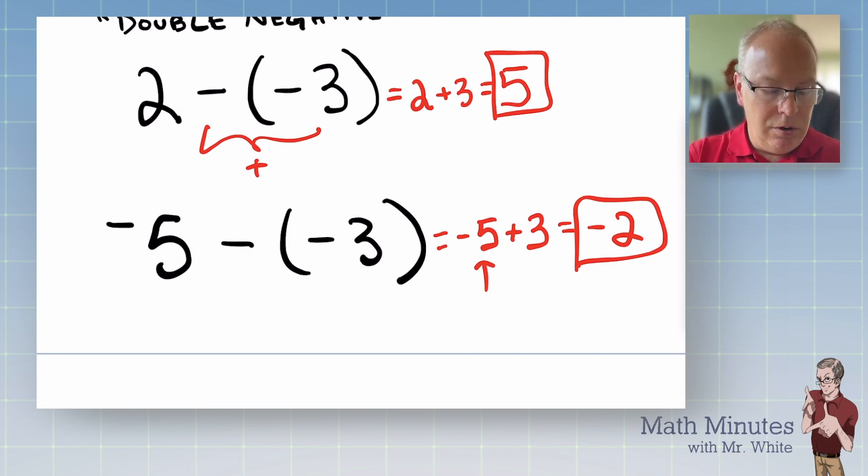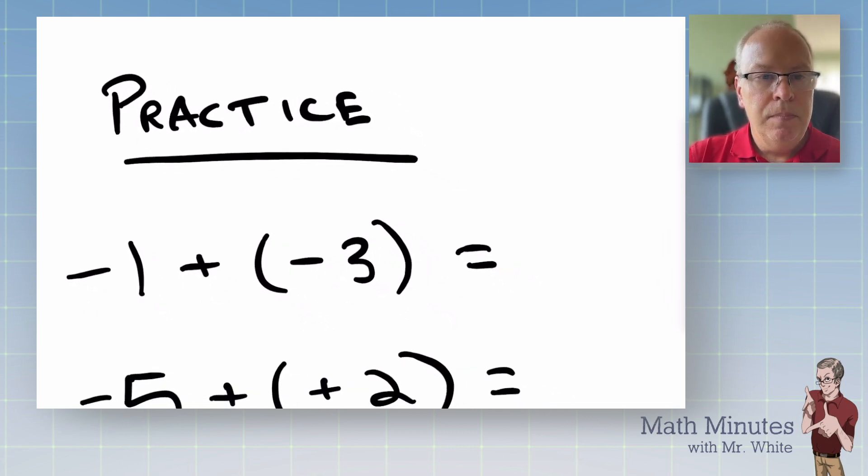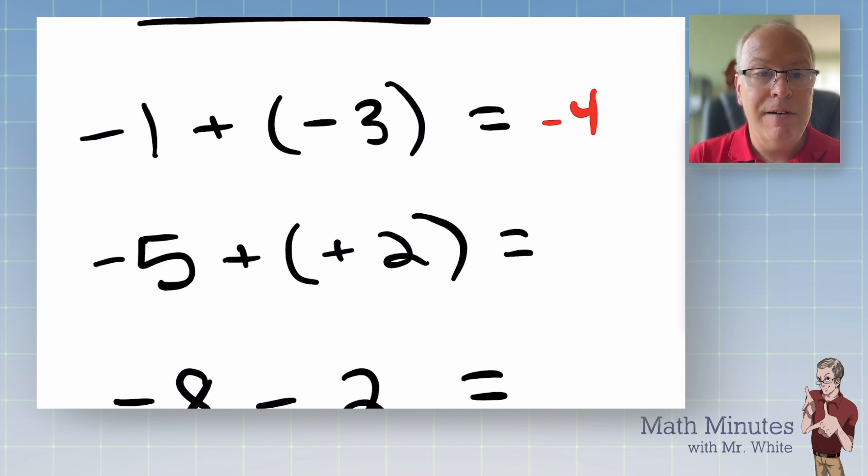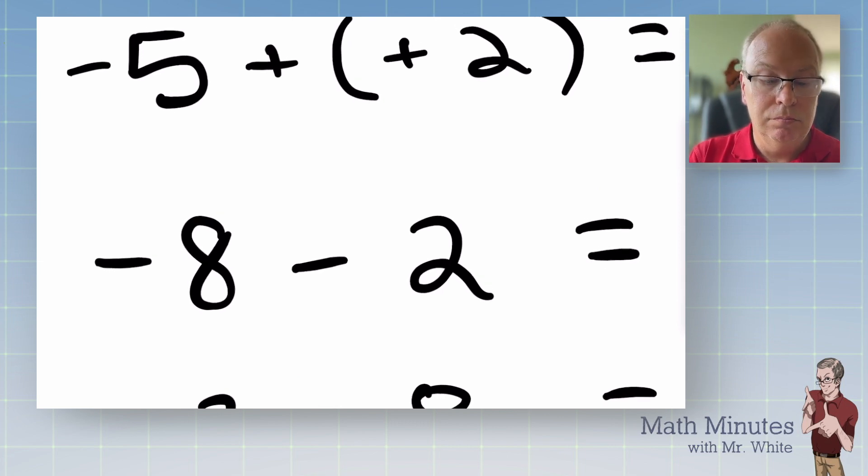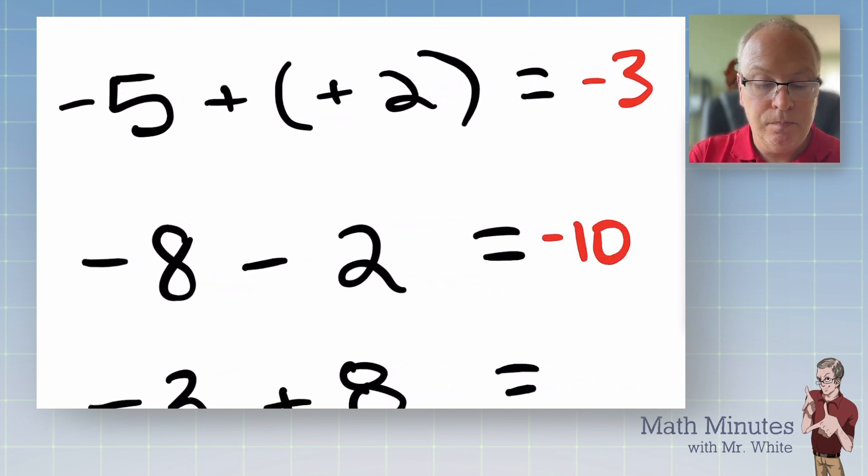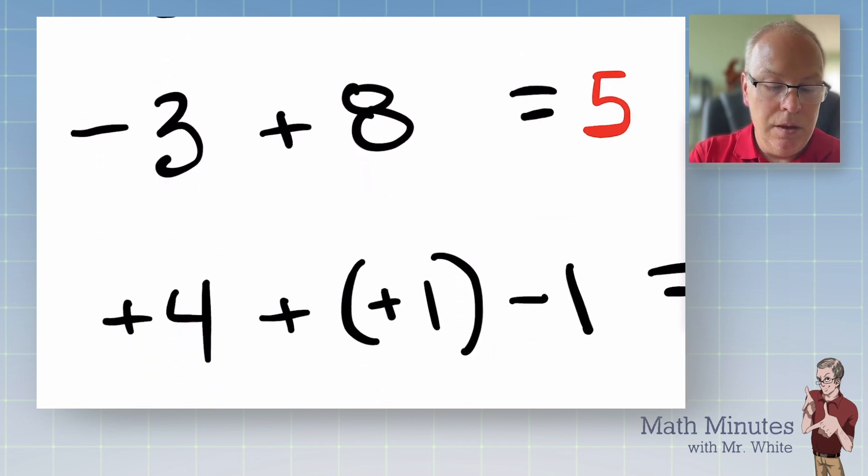All right. I think you're ready for a little bit of practice. So we're going to do this relatively quickly. OK, so here we go. What is negative one plus negative three? Negative four. What is negative five plus two? Who wins by how much? Negative three. What is negative eight minus two? No such thing as subtraction. Those are just both negatives. Negative ten. Next one. Negative three plus eight. Who wins by how much? Positive five.